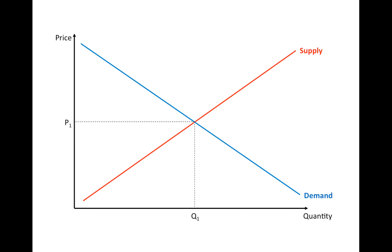We start with the normal supply and demand diagram for a country in autarky, where the equilibrium price is P1 and the demand is Q1.